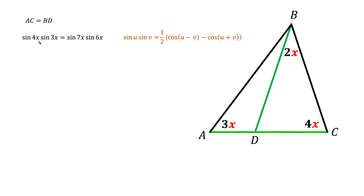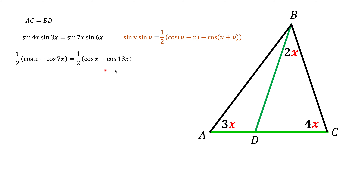On the left, u is 4x and v is 3x. On the right, u is 7x and v is 6x. If you're interested where these trigonometric formulas came from, I have links in the description. Applying the formula gives us an expression with one-half on each side, which cancel out. There's also a cosine x term on each side, which we cancel, along with the minus sign.